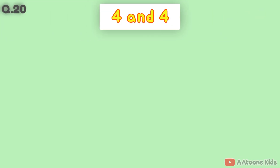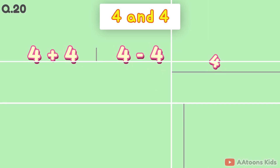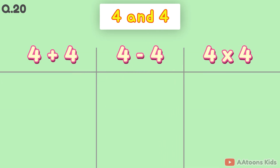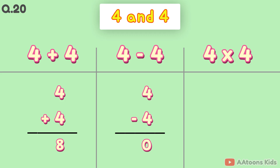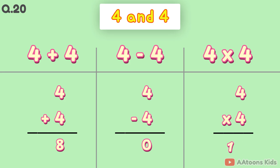The two numbers are 4 and 4. 4 plus 4 is 8. 4 minus 4 is 0. 4 times 4 is 16.